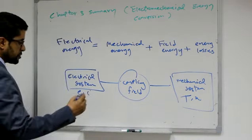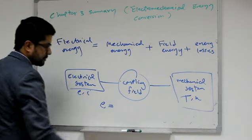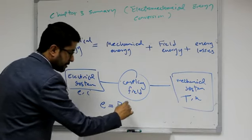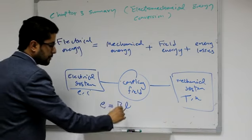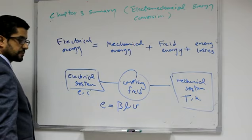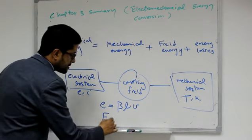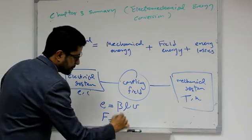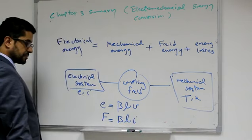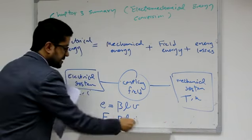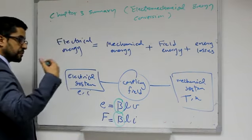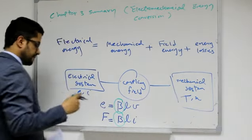Mathematically speaking, the motional voltage E equals B (flux density) times L (length of the conductor) times V (speed or velocity of the conductor). On the other hand, the Lorentz force equals flux density multiplied by the length of the conductor multiplied by the current carried by the conductor. In both equations, the coupling field must exist, in transferring from electrical energy to mechanical energy and vice versa.